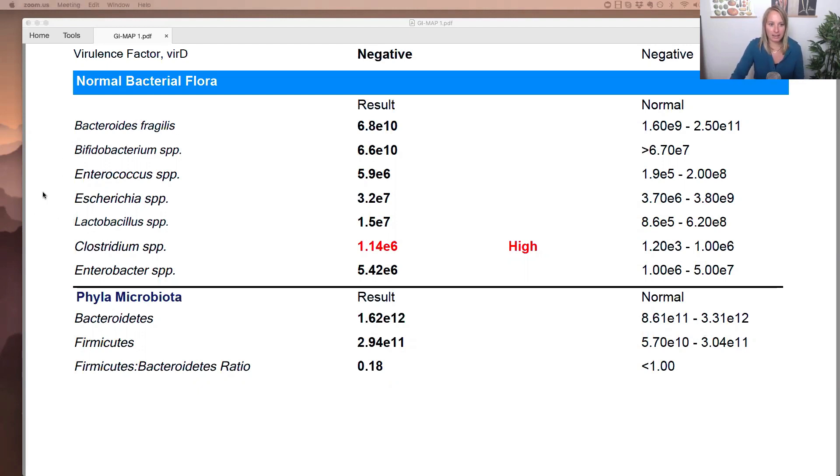Bifidobacterium and lactobacillus can actually fall into the same category because they both promote healthy digestion. They help maintain pH levels and immune system function. When these are low, a person is way more likely to have a pathogenic organism overgrowth.